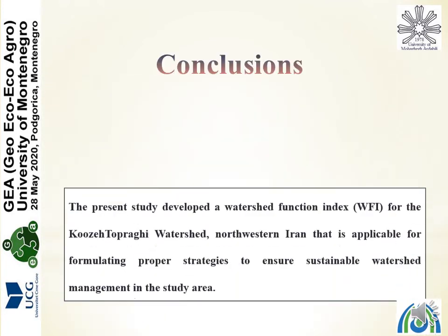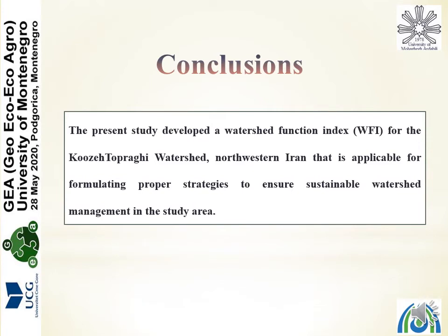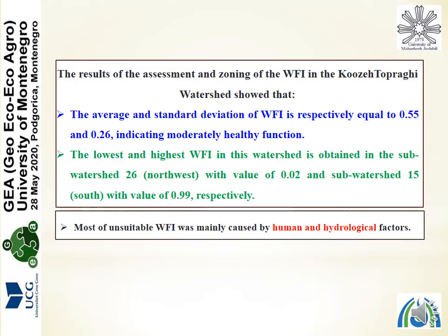In conclusion, this study developed a watershed function index (WFI) for the Cusatoprogli watershed in northwestern Iran, applicable for formulating proper strategies to ensure sustainable watershed management. The average and standard deviation of the WFI are respectively 0.55 and 0.26, representing a moderately healthy function. The lowest and highest WFI were obtained in sub-watershed 26 in the northwest and sub-watershed 15 in the south, respectively. Most of the unsuitable watershed function was mainly caused by human and hydrological factors.